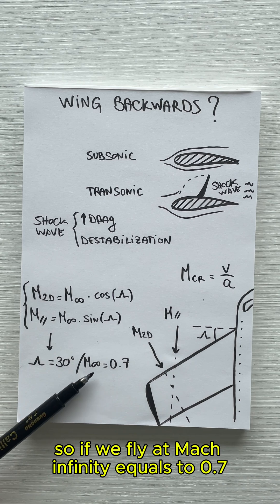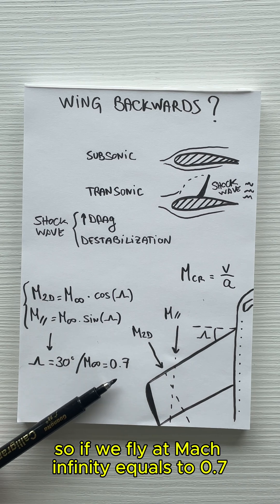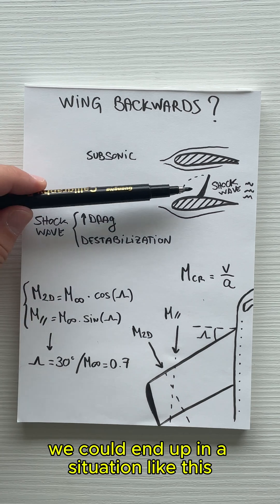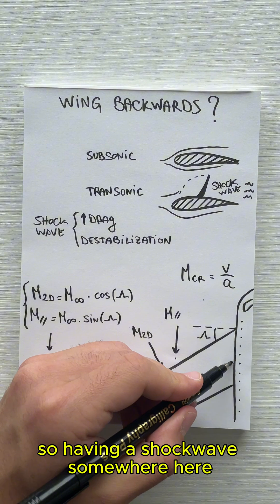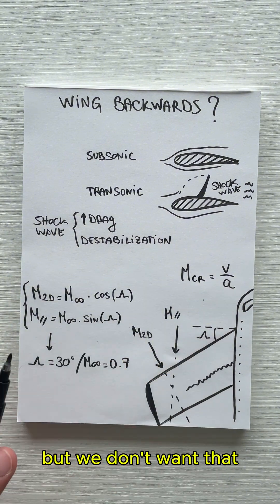So if we fly at Mach infinity equals to 0.7 and we have no sweep, we could end up in a situation like this, having a shockwave somewhere here, but we don't want that.